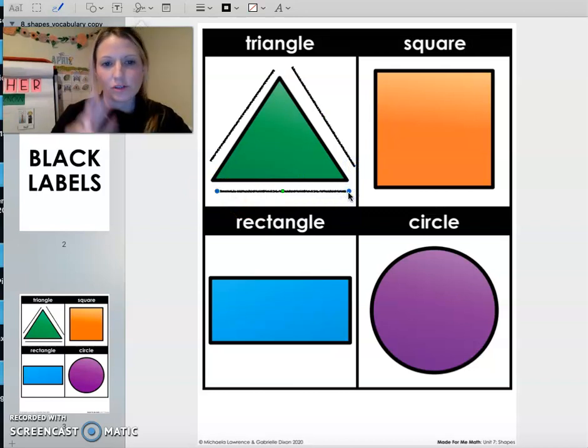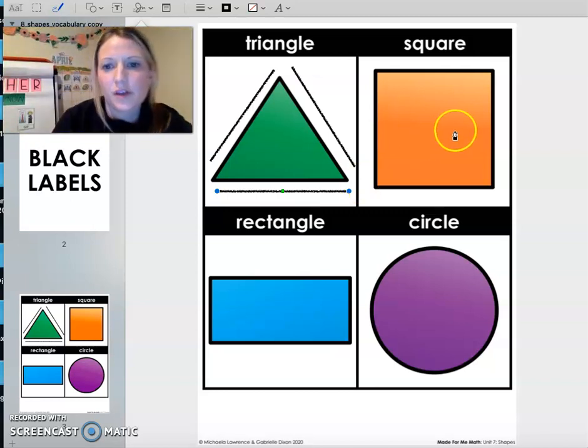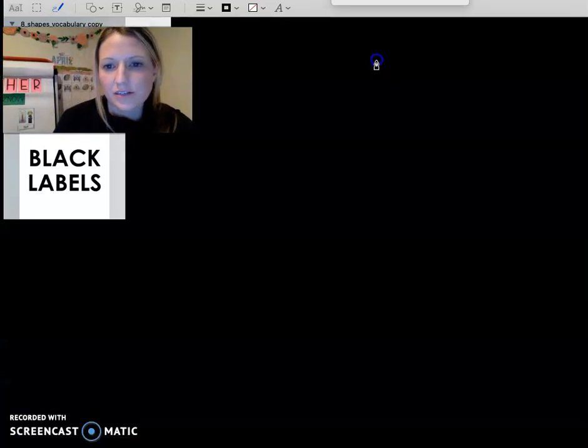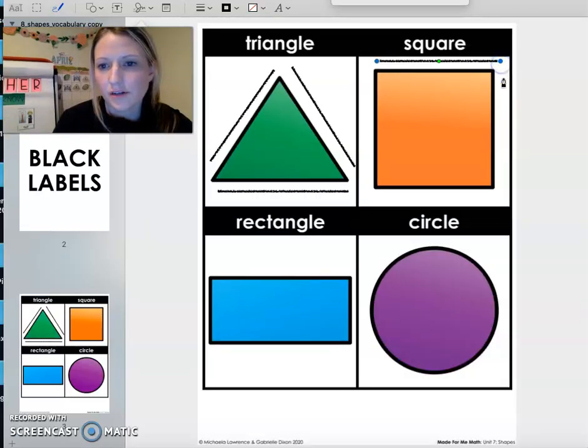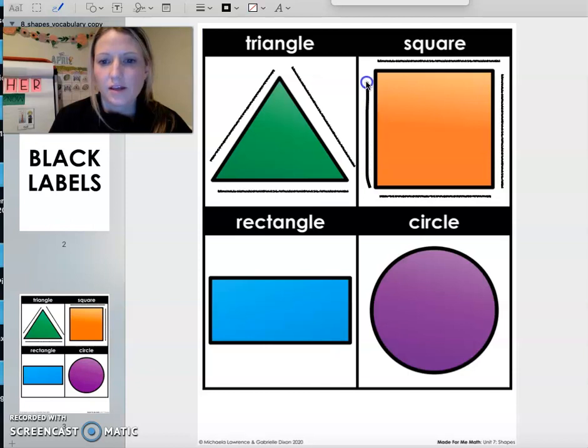Sometimes we get this square mixed up with the rectangle because they do look similar, but the square is always going to look a little shorter. Okay, so let's count the sides on a square. We have one, two, three, and four. Four sides on our square.